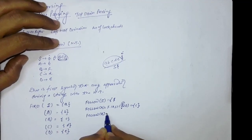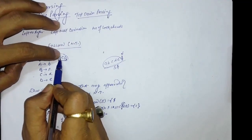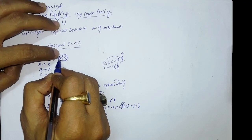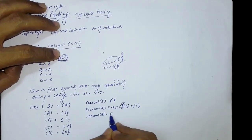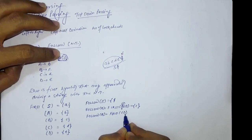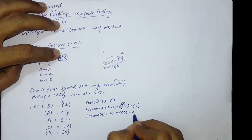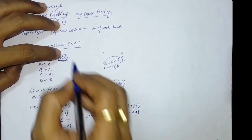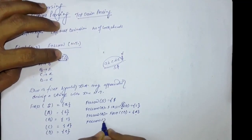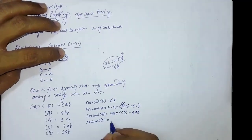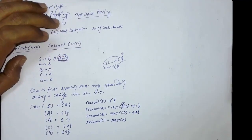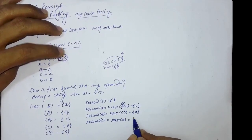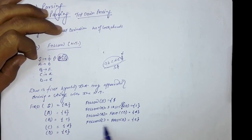Similarly, for FOLLOW(B), we look for B on the right-hand side. After B, C and D are coming. So we compute FIRST of C D. Since C produces small 'd', replacing C gives 'd', so FOLLOW(B) = {d}. For FOLLOW(C), we compute FIRST of capital D. D produces e, so FIRST(D) = {e}, meaning FOLLOW(C) = {e}.